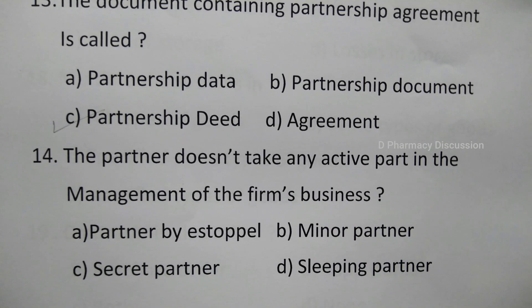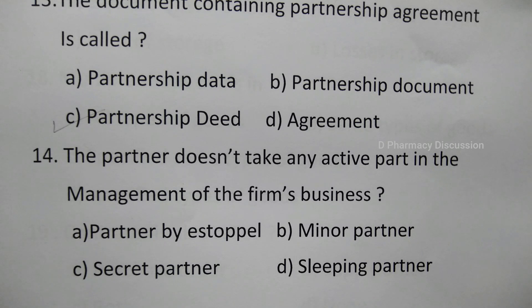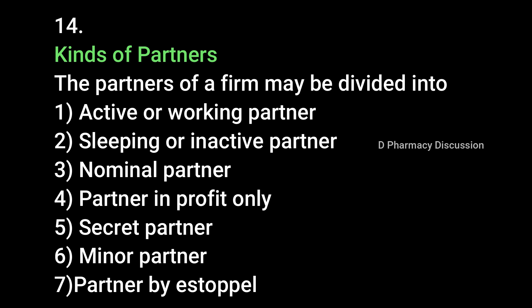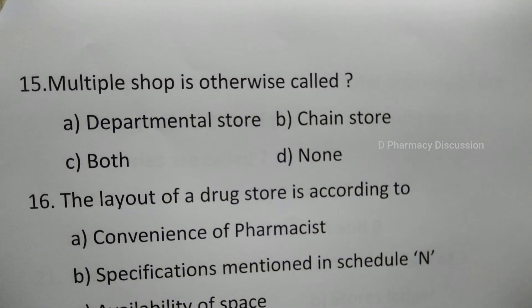Question 14: The partner who doesn't take any active part in the management of the firm's business is — option A: partner by estoppel, B: minor partner, C: secret partner, D: sleeping partner. The correct answer is option D, sleeping partner. The kinds of partners include active or working partner, sleeping or inactive partner, nominal partner, partner in profit only, secret partner, minor partner, and partner by estoppel.